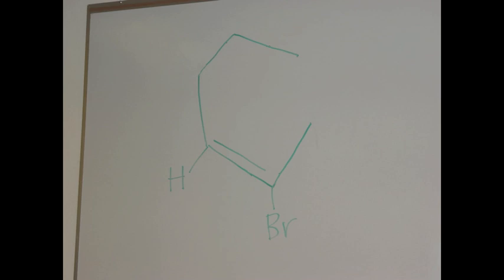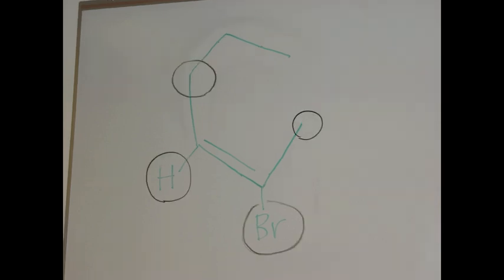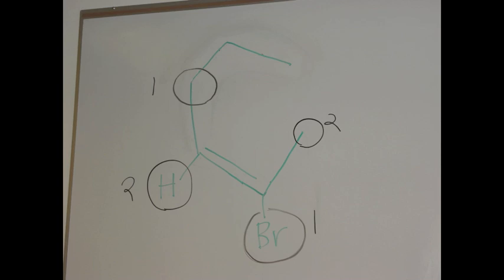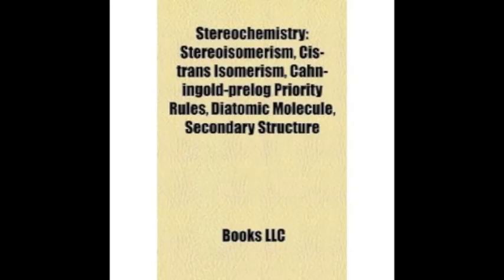We cannot name this molecule with the cis-trans system, because the substituent groups are different. It is easier to label each substituent about the double bond with relative priority, according to the Cahn-Ingold-Prelog priority rules.